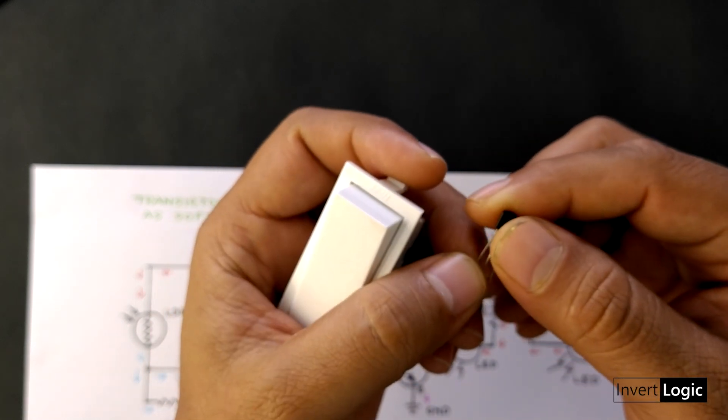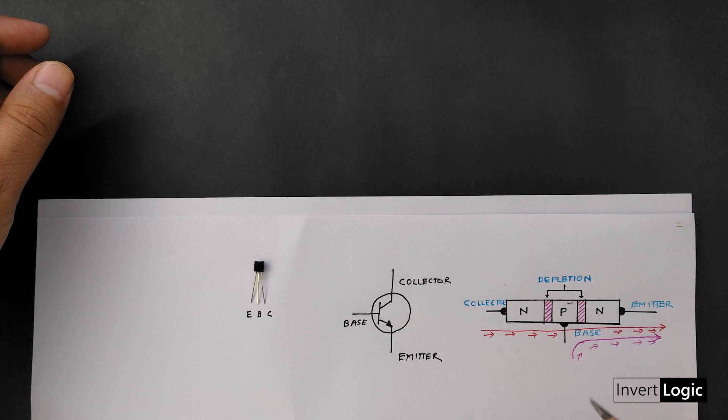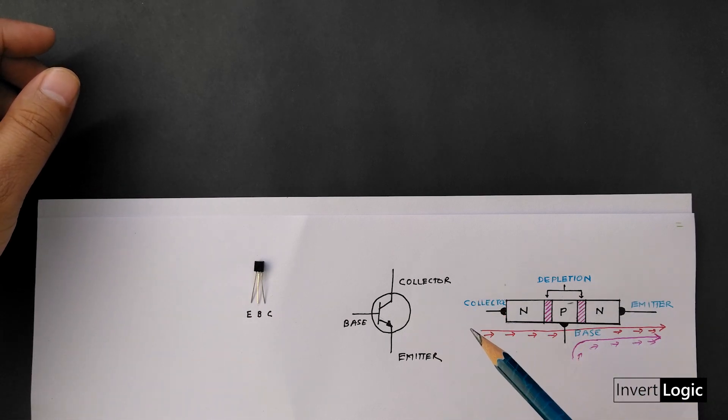So what is the transistor? The transistor is a semiconductor device that is used to amplify or switch electronic signals and electronic power.